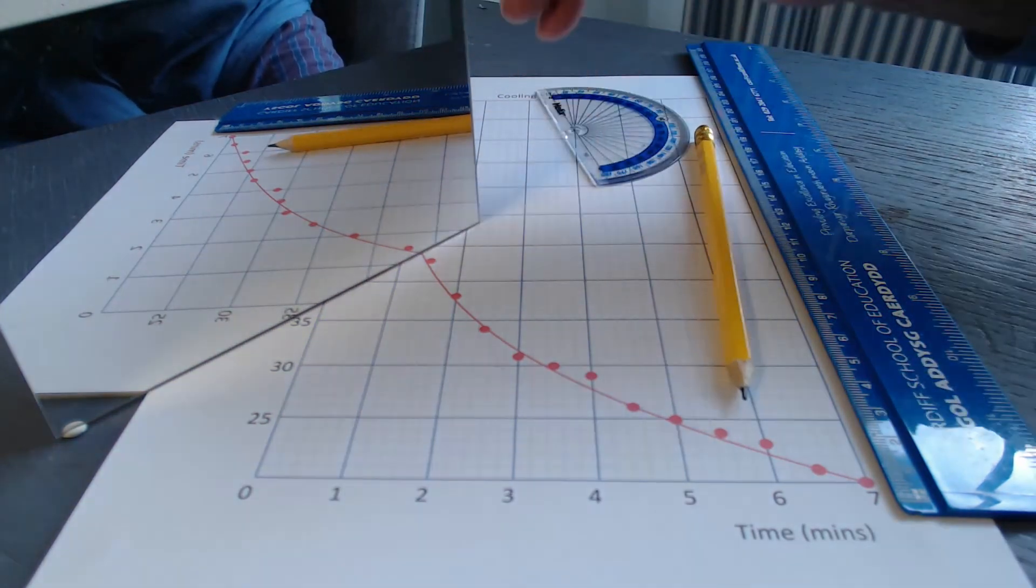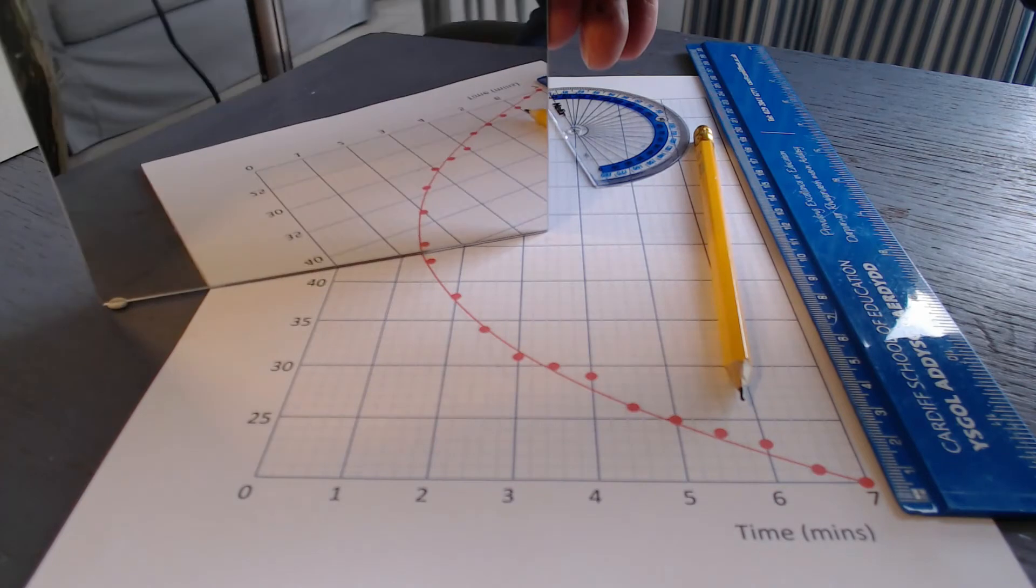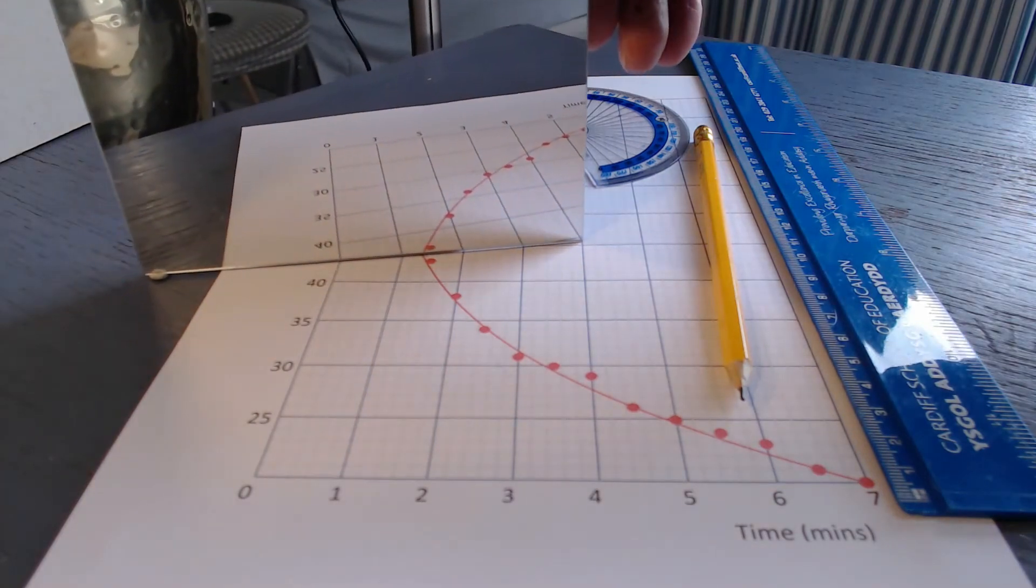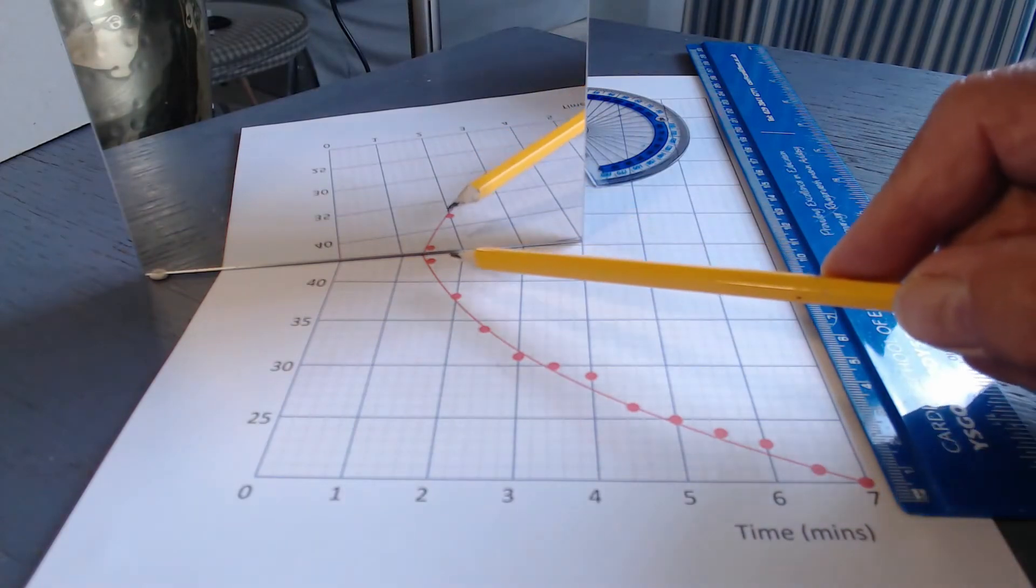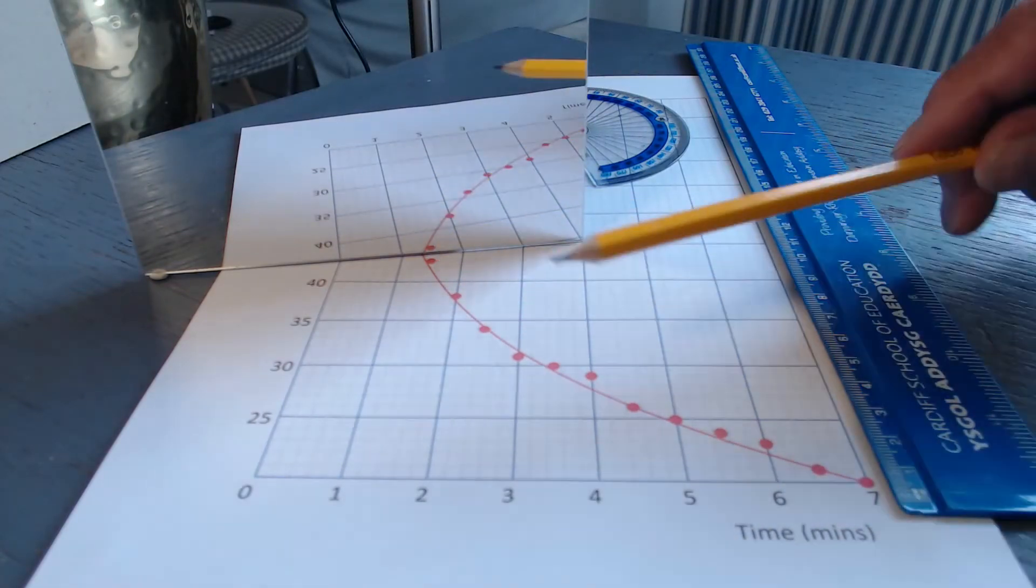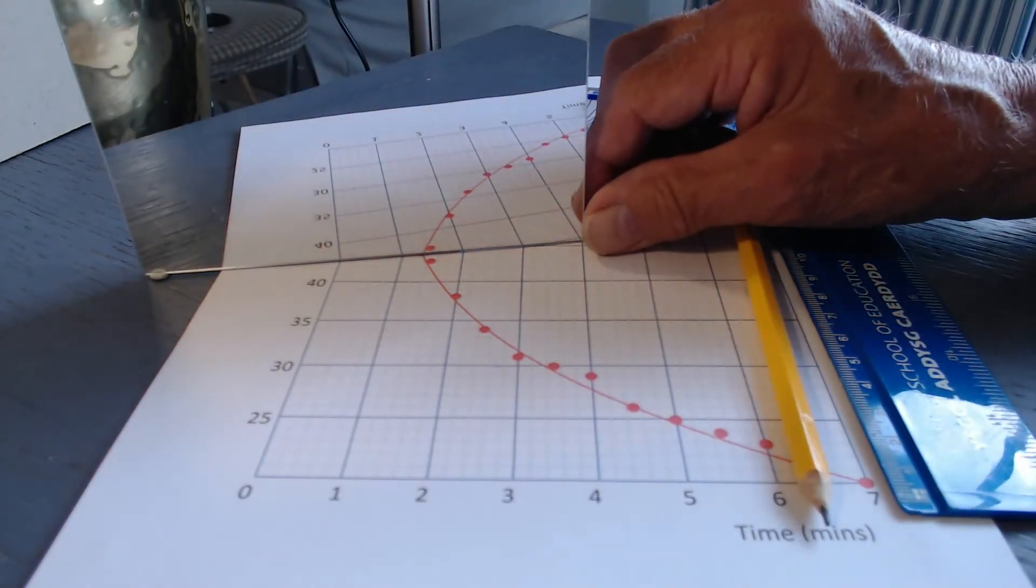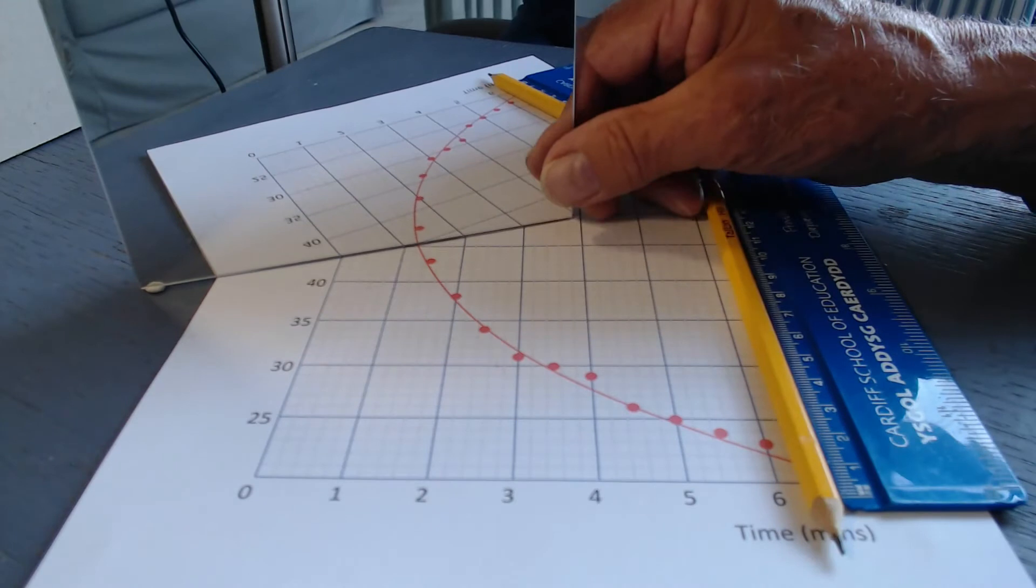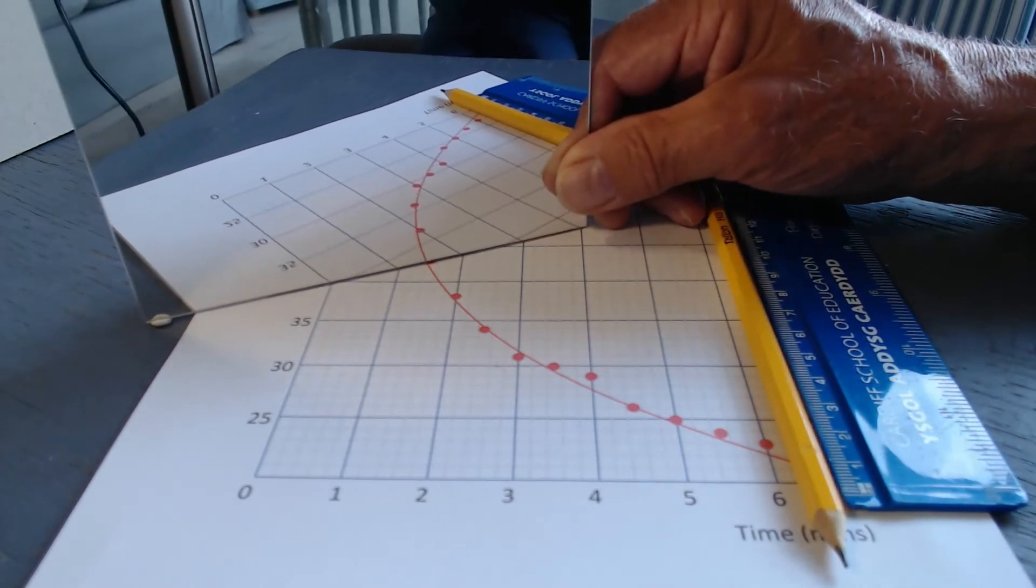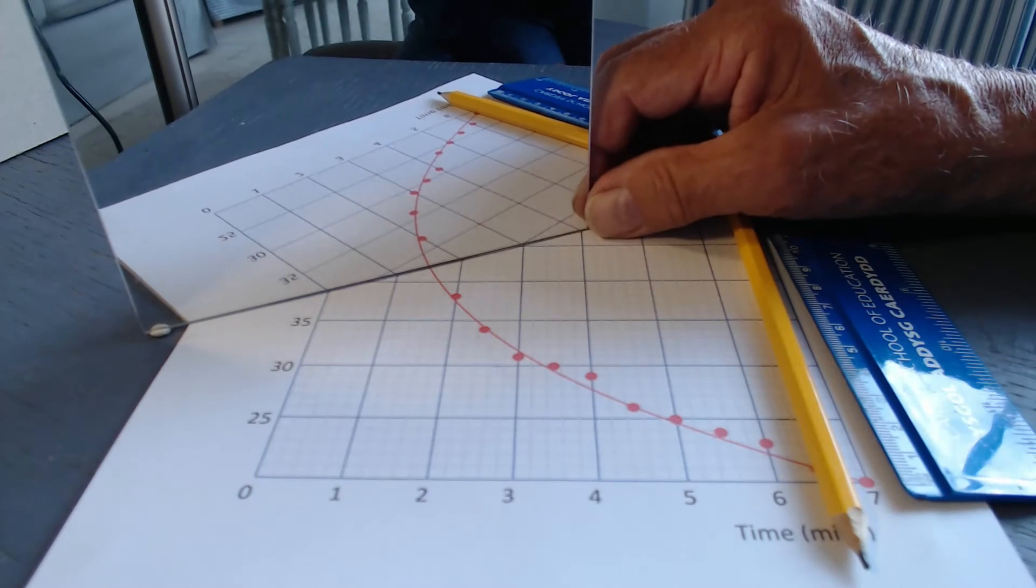I'm now going to twist the mirror so that there appears to be no change of direction. But of course, I've gone too far quite deliberately. You see, again, I've now got a change of direction. But this time, I'm going to move it back now, gently, so that a point should be reached where there is no change of direction. And this you have to do by judgment.